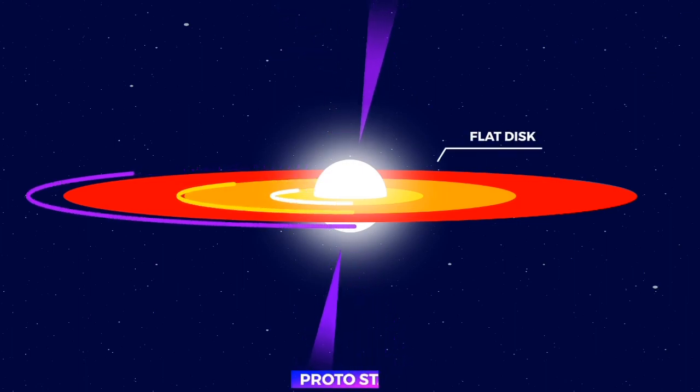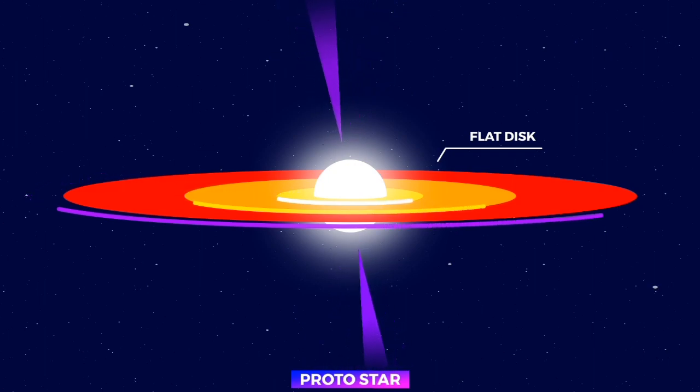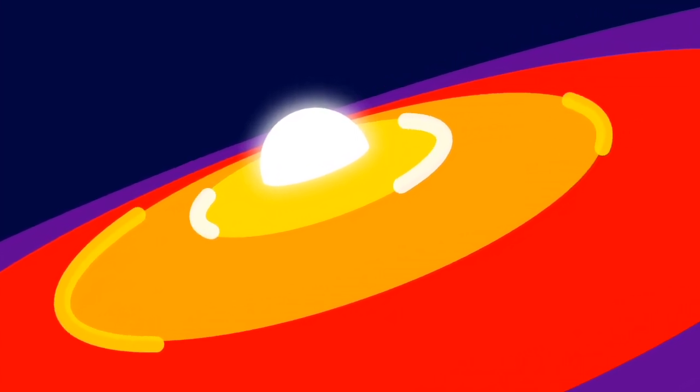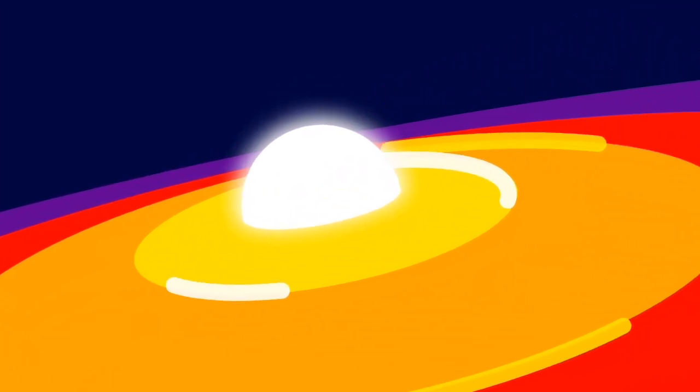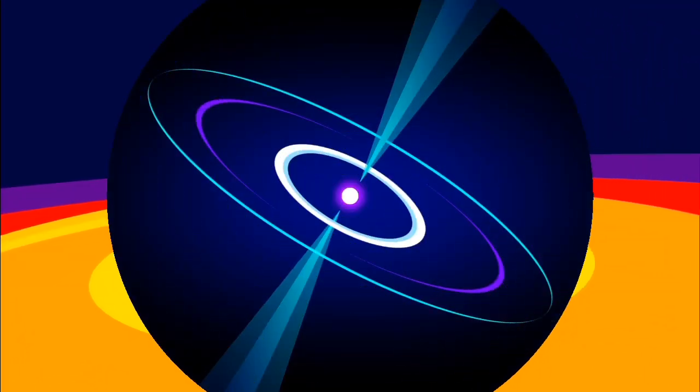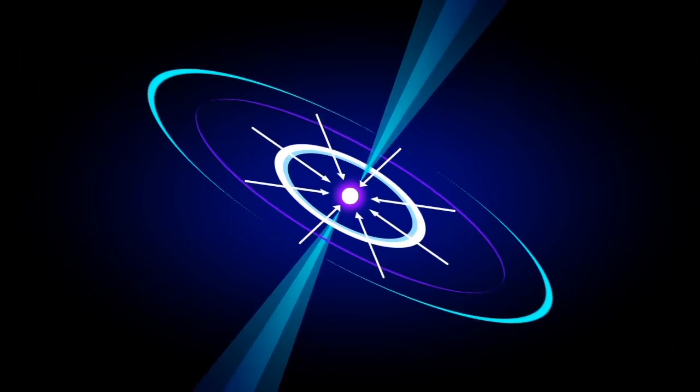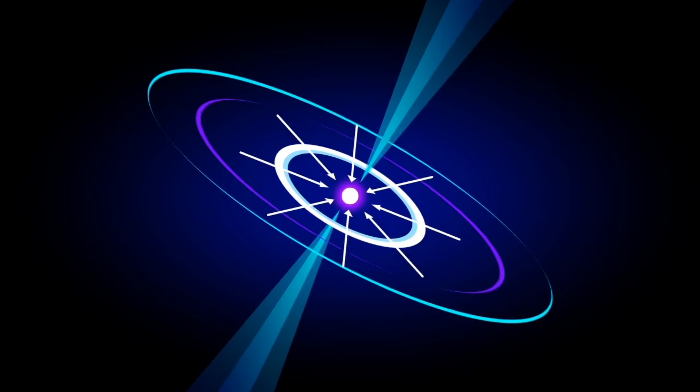This process causes a flat disk to form around the pre-stellar core. The system is now called a protostar, which means it is at its very first stage of becoming a real star. The disk is crucial for the protostar to grow into a properly sized star. The disk is mainly composed of gas, which rotates with the disk and slowly approaches the surface of the protostar. When the gas comes close enough to the star, it falls onto the surface of the star because of gravity, and the star grows.